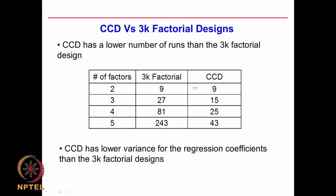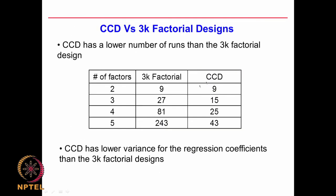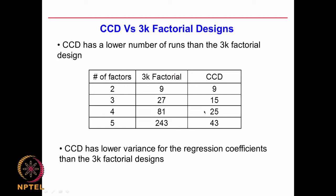Comparing with the 3^k factorial design: for 2 factors, 3 levels, 3^2 = 9 experiments. CCD also gives you 9 experiments for 2 factors. The number of experiments is the same, but when doing a 3^2 factorial I am looking at each factor only at 3 levels, whereas when I use a CCD I am looking at each factor at 5 levels. So I will get a better non-linear relationship.